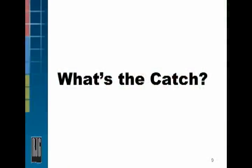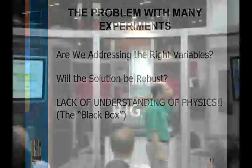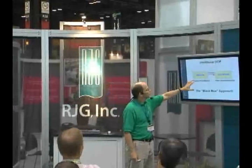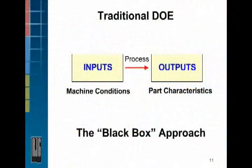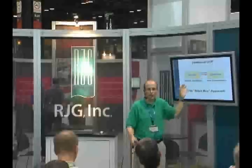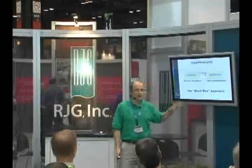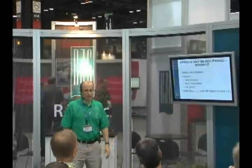So what's the catch? If this is so great, why isn't everybody doing it? Here's the problem — the same one we ran into in the early 90s across the industry. Traditional DOE says we've got inputs: our machine conditions — fill speed, hold pressure, transfer positions, all the settings on the press that we can change. It assumes there's a direct relationship between those inputs and our part characteristics, and the DOE will mathematically model that. We don't really need to understand what's going on inside the process; the DOE will just take care of it all. Let's talk about why this doesn't work.